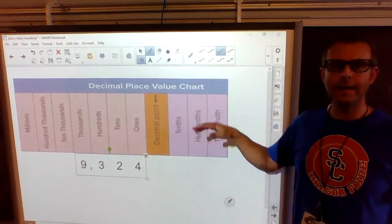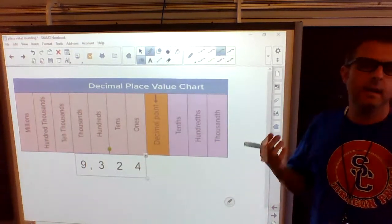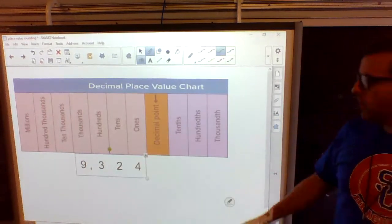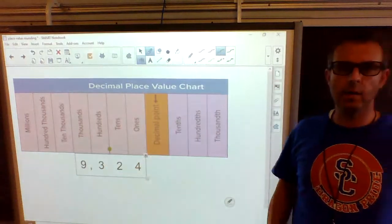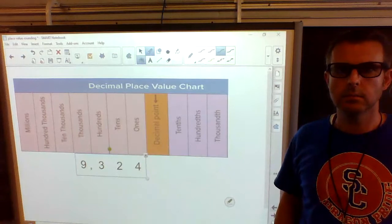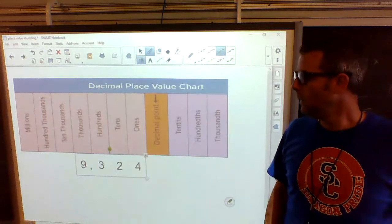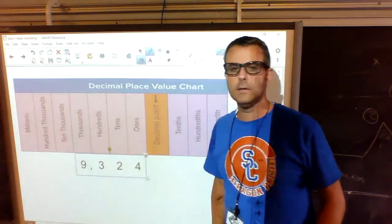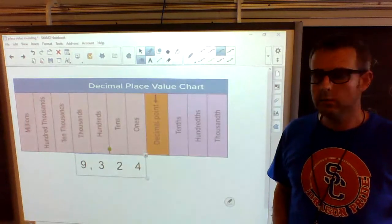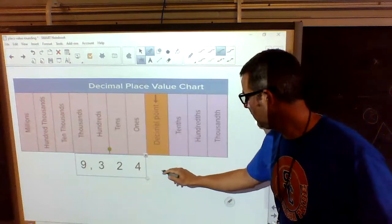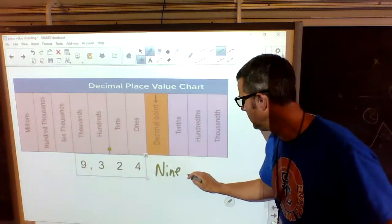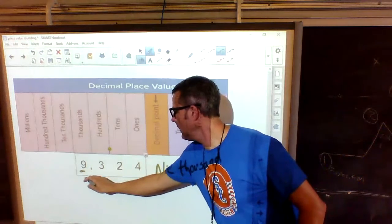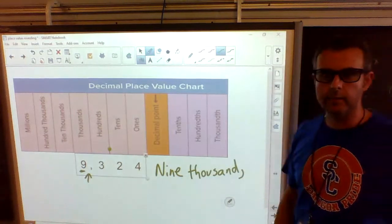So here is our first number. I did put our place value chart up here just so that, in case you forget what value each column's worth, it's back there for you so you can see it. But our first number is right here. This is the number form of that word. What's that number? I heard somebody say it. Yeah, good job. We're going to look at this first thing before the comma. We have nine what? Thousand. So we have to write nine thousand using words.